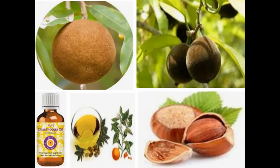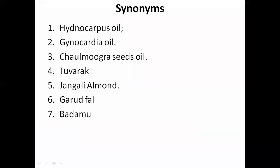Discussing the different synonyms of this drug: it is also known as Hydnocarpus oil, since the genus name is Hydnocarpus wettii. It is also called Ganocardia oil and Chalmogra seeds oil, since it is obtained from seeds inside the fruits that we separate out and subject to expression to get the oil. It is also known as Tuwarak, and Jangali almond in Hindi. Another name is Garurfall — Garur is the name of a bird, famous in the Ramayana and Mahabharata.